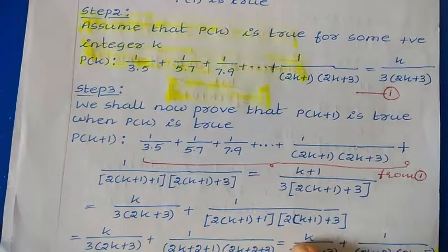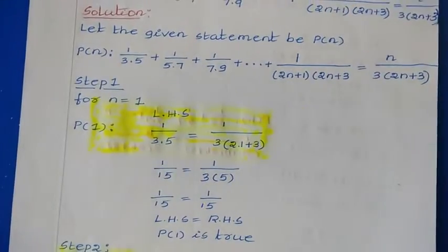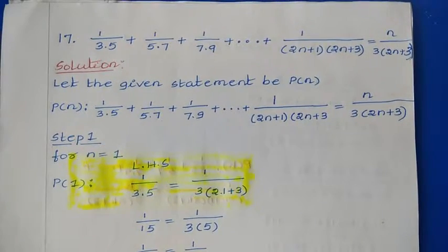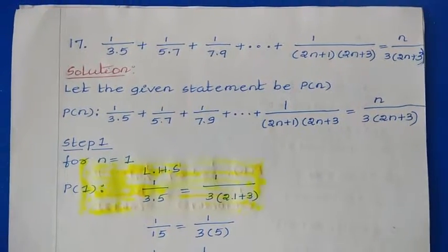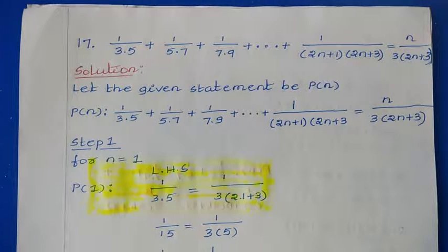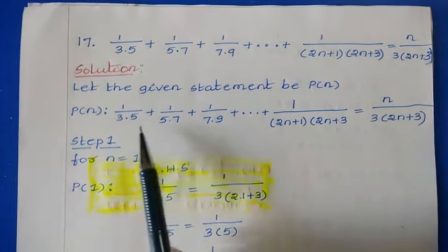This is the solution for Question 16. Next, Question 17: 1/(3×5) + 1/(5×7) + 1/(7×9) + ... + 1/((2n+1)(2n+3)) = n/(3(2n+3)). Let us say the given statement is P(n). The first step is to check for n = 1, that is P(1). From the left hand side, I consider the first term, which is 1/(3×5).